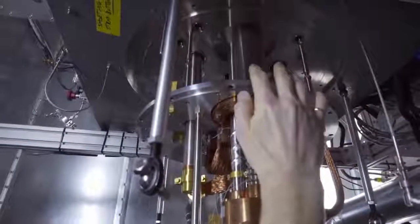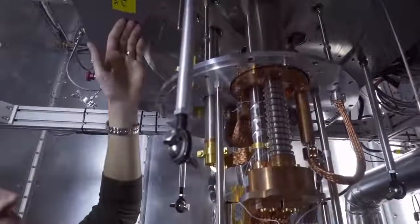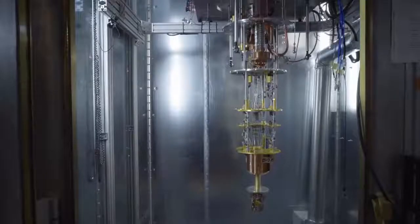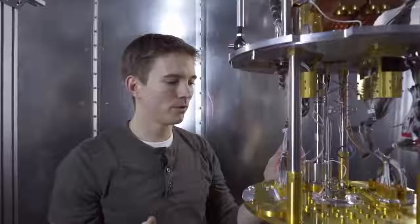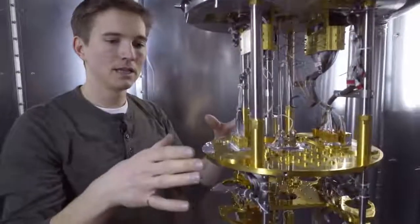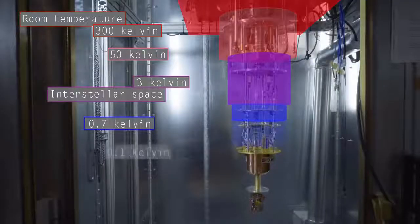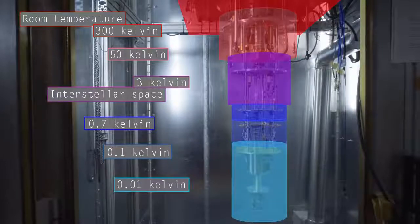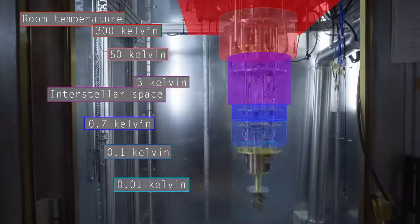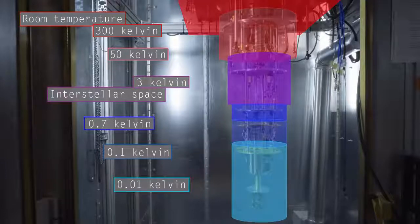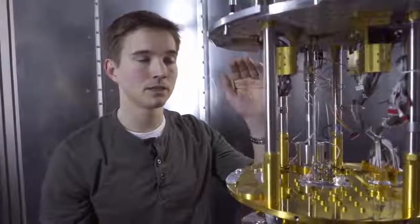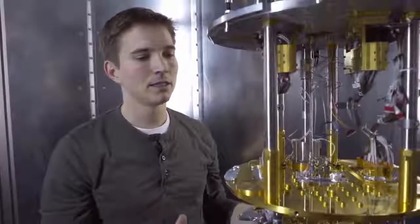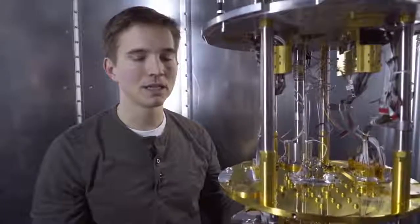There's two levels of cooling in this system. The top one is a pulse tube refrigerator, which takes us from 300 Kelvin to 50 Kelvin, and then down to 3 Kelvin. This is roughly the temperature of interstellar space. And then a second refrigerator, a dilution refrigerator, takes us in this plate from 0.7 Kelvin, 0.1 Kelvin, and then down to 0.01 Kelvin. When the system is operating, this plate and everything mounted below it is ten thousandths of a degree above absolute zero, which is more than a hundred times colder than interstellar space. And this whole system is designed to sustain those low temperatures in a continuous cycle.